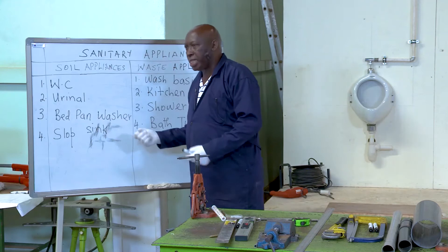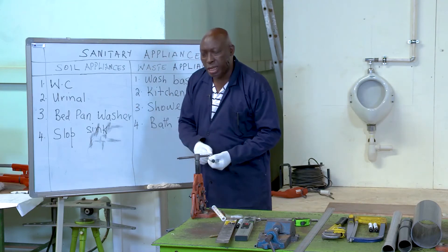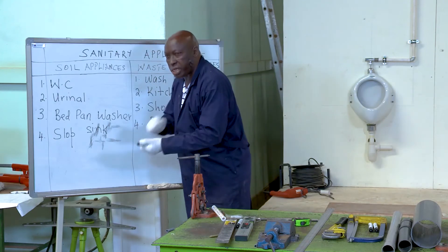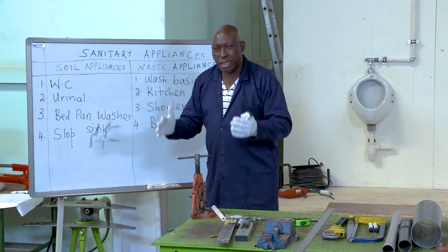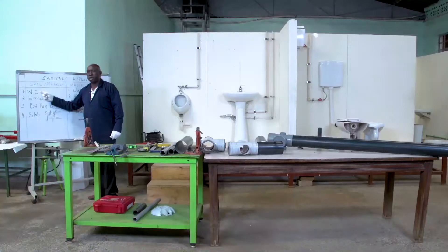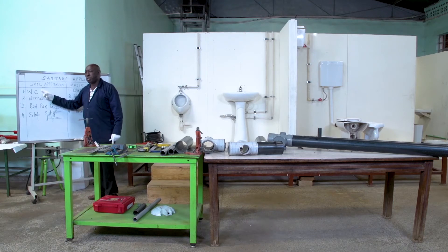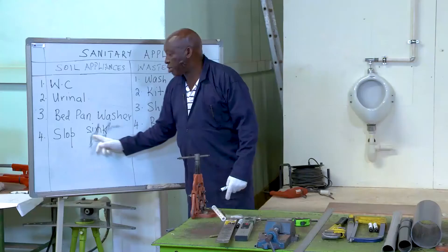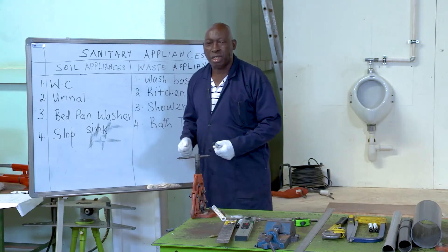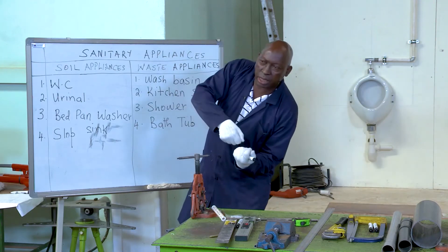The bedpan washer is used to remove soiled bed sheets and blankets for washing. When they wash those dirty beddings, they don't pour the waste into the WC, because other people use that WC and the next person could be contaminated. So there is a special appliance called a slop sink, which receives the waste from the patient at the bedside. Once washed, they pour it into the slop sink.